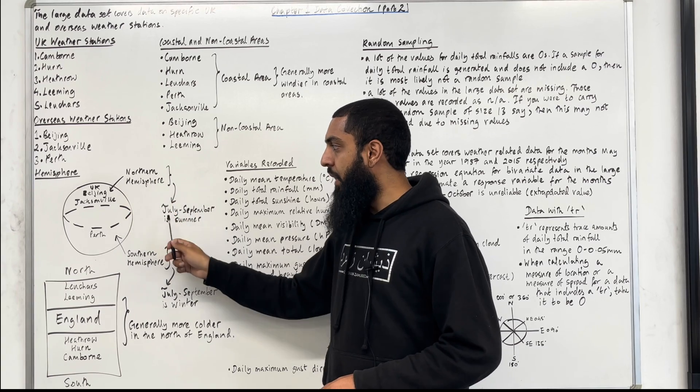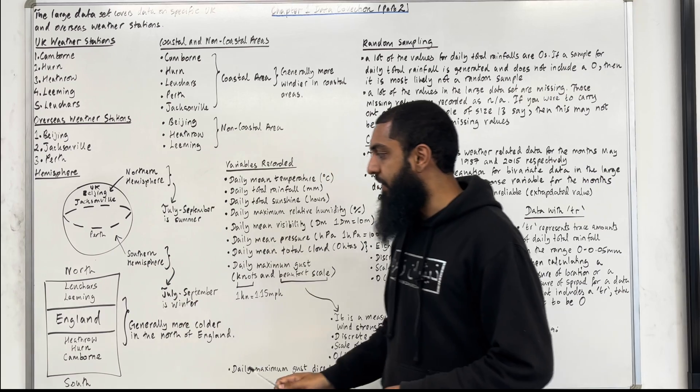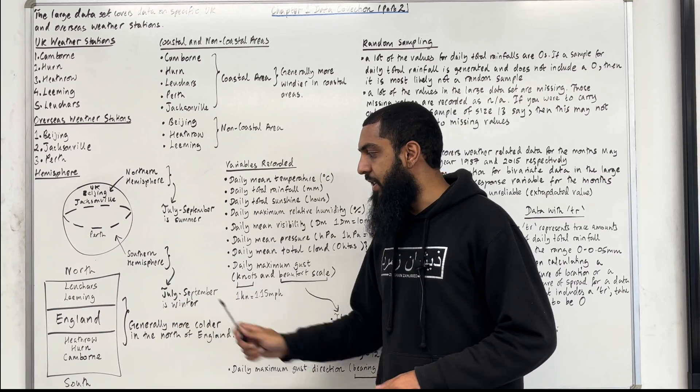We know that for the Northern Hemisphere from July to September it is summer, whereas in the Southern Hemisphere from July to September it is winter.